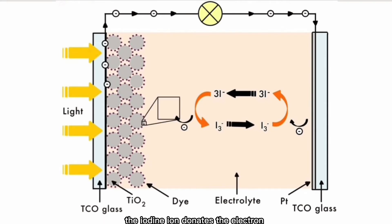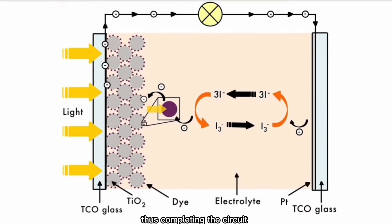At the photoanode, the iodide ion donates the electron and undergoes oxidation to become a triiodide ion once again. The electron released is then accepted by the ionized dye molecule, thus completing the circuit. This process is repeated so that the solar cell continues to work.